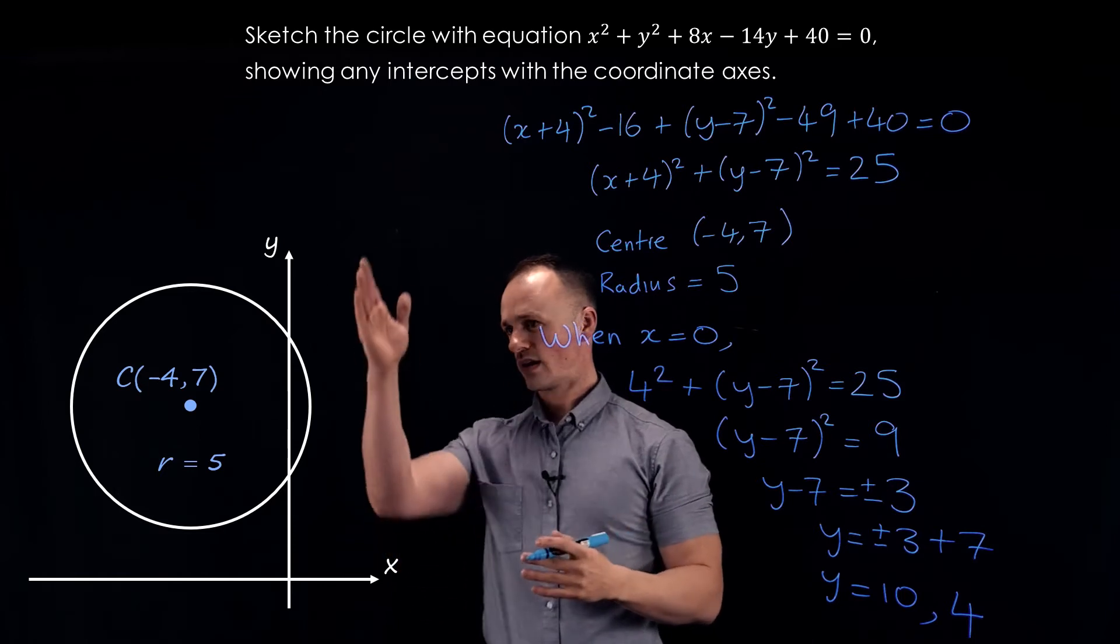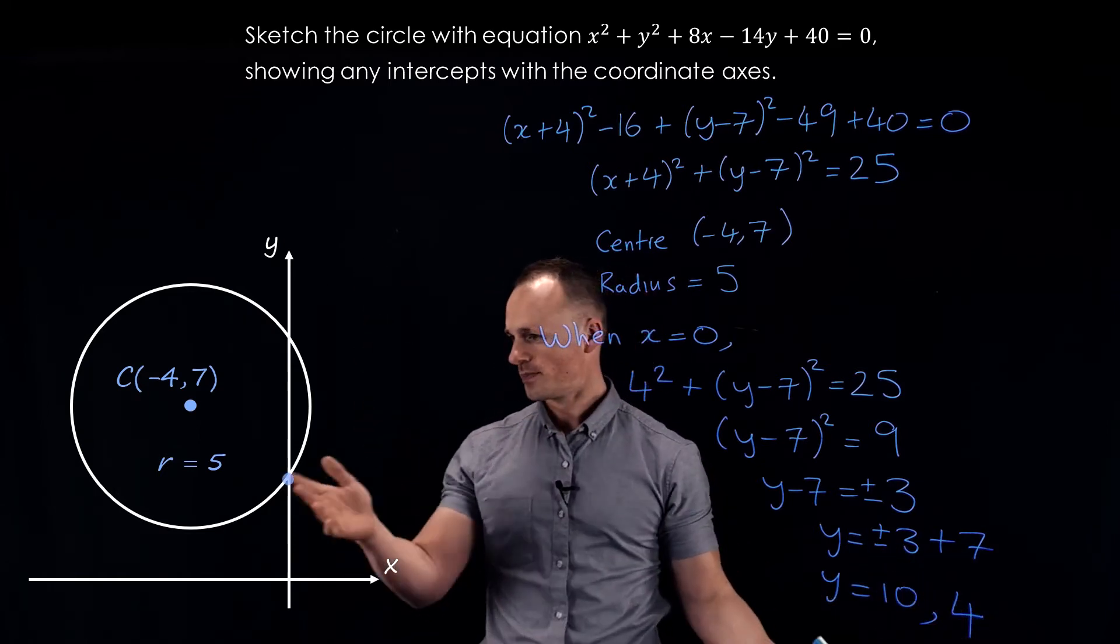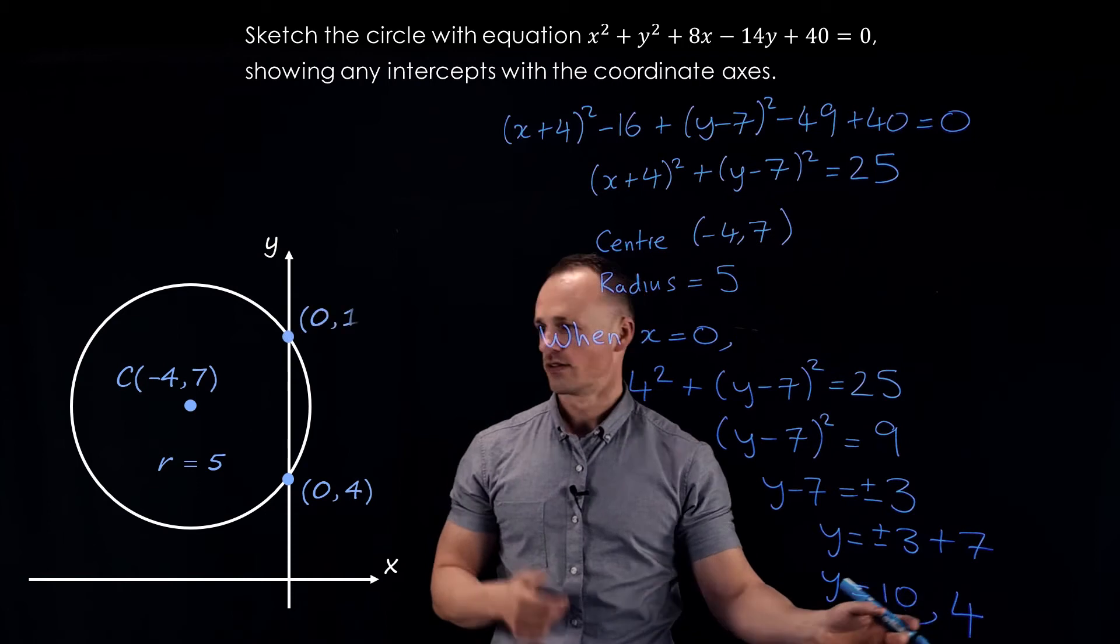So the two points where it crosses the y-axis are going to be 0, 4, and 0, 10.